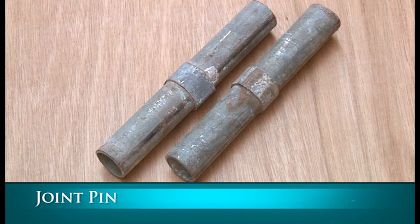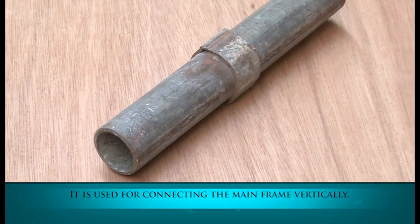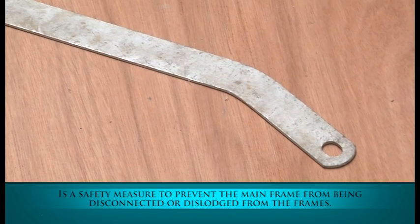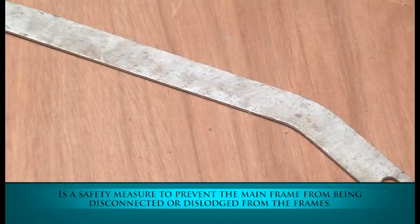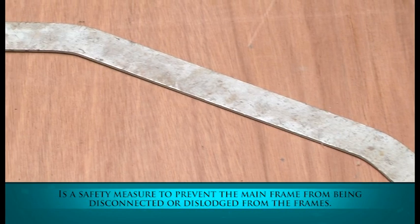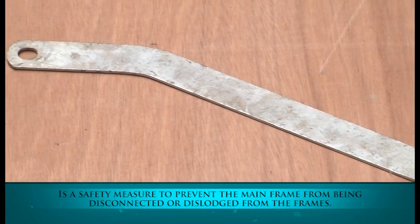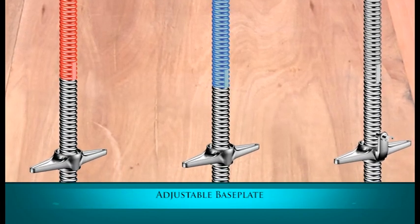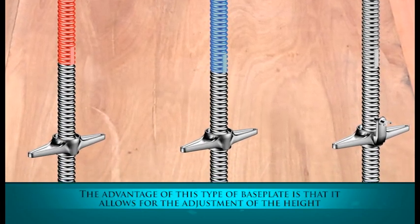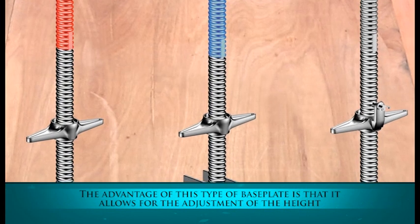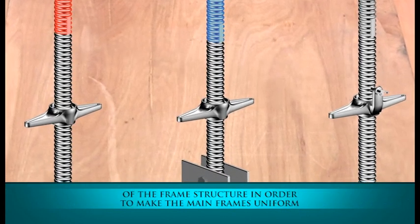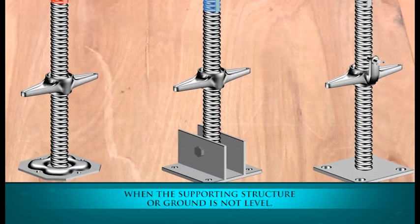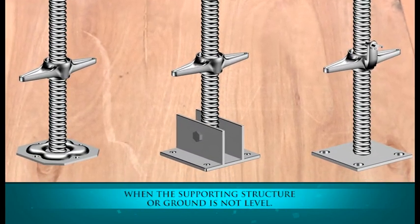The joint pin is used for connecting the mainframe vertically. The arm lock is a safety measure to prevent the mainframe from being disconnected or dislodged from the frames. The adjustable base plate allows for the adjustment of the height of the frame structure in order to make the mainframes uniform when the supporting structure or ground is not level.